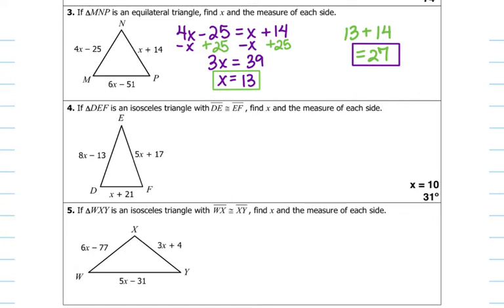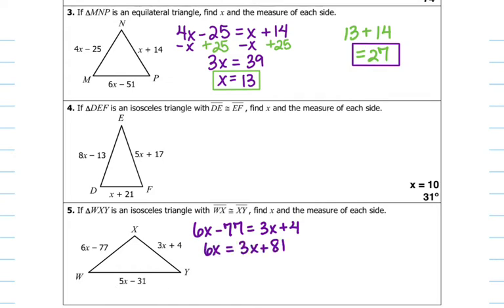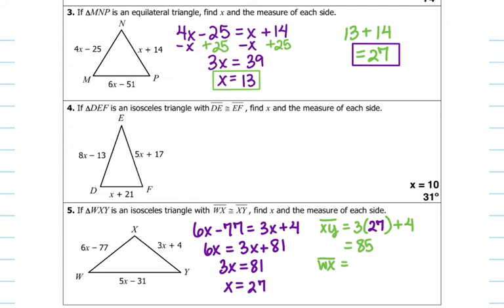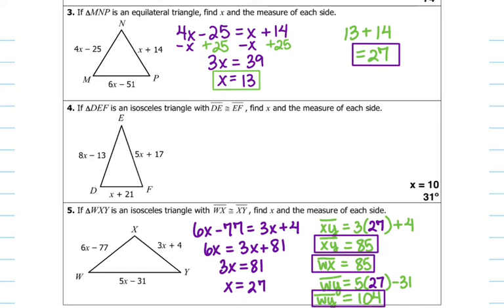Number five: triangle WXY is an isosceles triangle with WX congruent to XY. Find X and the measure of each side. We set WX equal to XY because the longer side is different from the other two. Solving for X: add 77 to the right, subtract 3X to the left, then divide by three — X equals 27. Plug 27 back in: 81 plus 4 is 85, so WX equals 85 and XY equals 85. On the bottom, 5 times 27 minus 31 equals 104. So the measure of each leg is 85, 85, and 104.